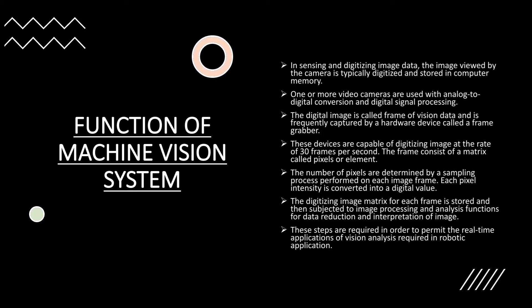One or more video cameras are used with analog-to-digital conversion and digital signal processing. The digital image is called a frame of vision data and is frequently captured by a hardware device called a frame grabber. These devices are capable of digitizing images at the rate of 30 frames per second.